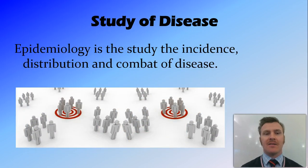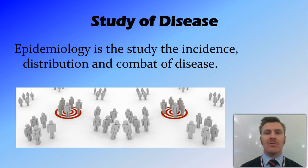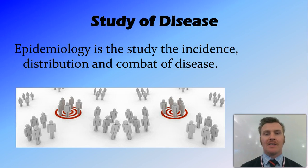The second study of disease is epidemiology. Epidemiology is the study of the incidence — so how often the disease is occurring — distribution, where it's occurring, and the combat of disease, so how to stop it from occurring. Rather than looking at what the disease does to your body, it looks at how the disease spreads throughout a community and tries to stop that spread.